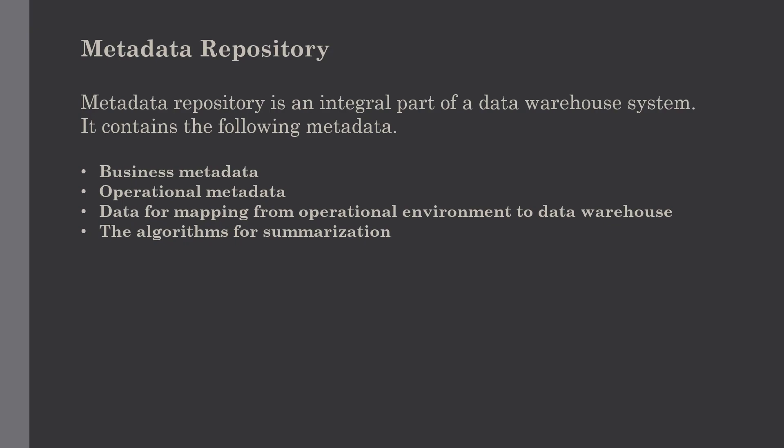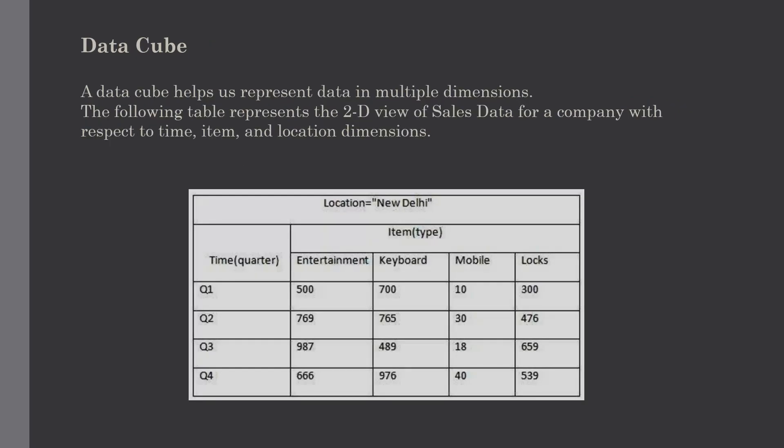The next type is operational metadata, which includes the currency of data. After that, we have data for mapping from the operational environment to the data warehouse — this includes source databases and their contents, as well as data extraction, data partition, data cleaning, transformation rules, refresh and purging rules. The last one is algorithms for summarization, which includes dimension algorithms, data on granularity, aggregation, and summarizations.